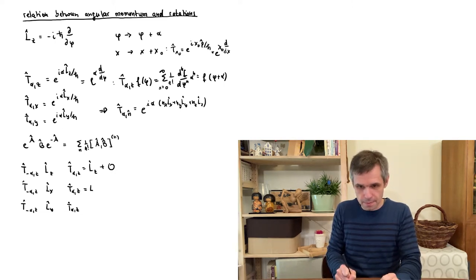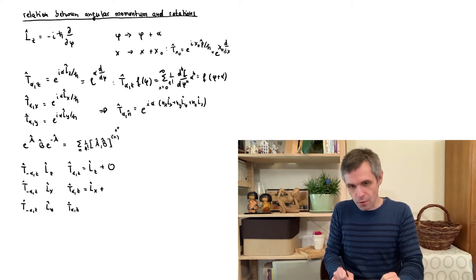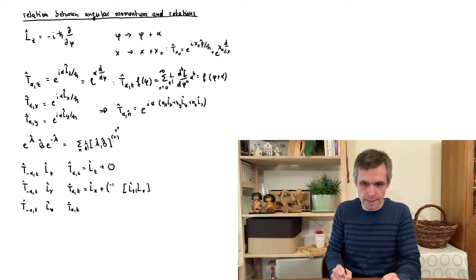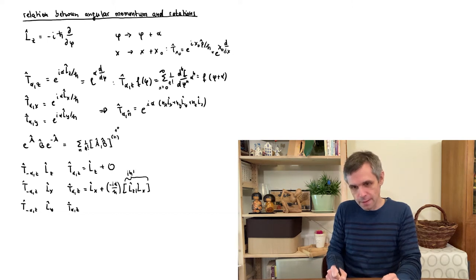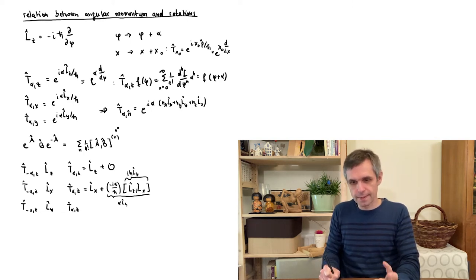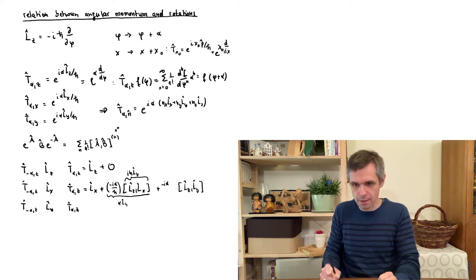For the Lx expression, we start with Lx — that is simply the zeroth-order term — and then encounter the first commutator of Lz with Lx, multiplied by a factor of −iα/ℏ. This commutator equals iℏ Ly, so the first-order term becomes α·Ly. This feeds into the next commutator, where we compute the commutator between Lz and Ly, again multiplied by −iα/ℏ and the factor α, plus one-half from the 1/n! prefactor.